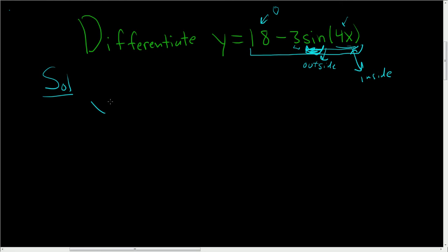So let's take this derivative. y prime - well, the derivative of 18 is 0, I'll go ahead and write it - minus 3 times the derivative of sine 4x.